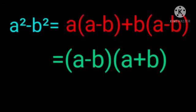Taking (a - b) common from both terms, what remains is a and b with a plus sign in between. We get (a - b)(a + b). That is what we wanted to prove: a² - b² = (a - b)(a + b), or equivalently, a² - b² = (a + b)(a - b).